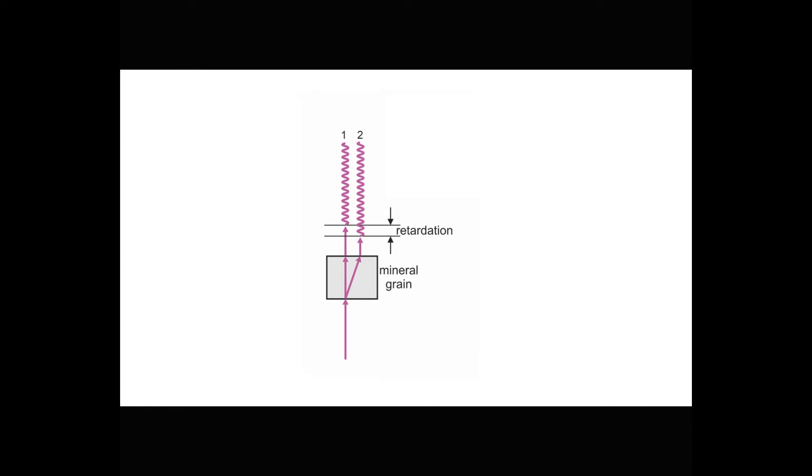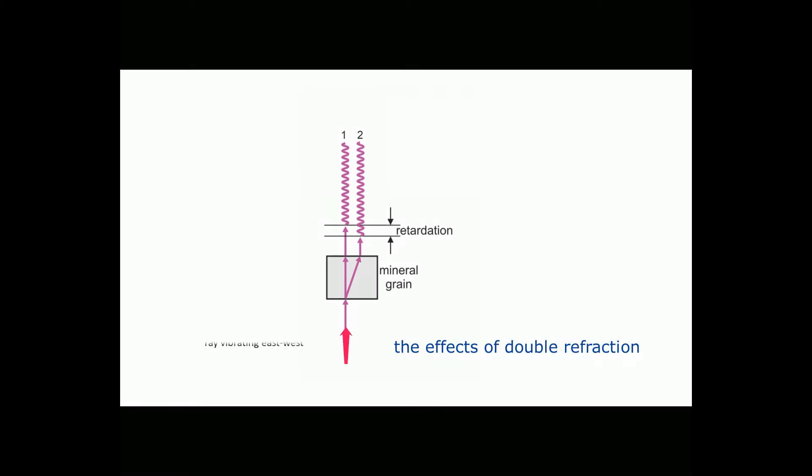All anisotropic crystals cause double refraction. When a polarized beam of light enters a crystal from below, it's split into two rays, a slow ray and a fast ray. When the two rays leave the crystal, the fast ray is ahead of the slow ray by some distance called the retardation.